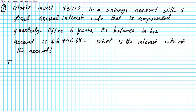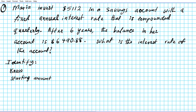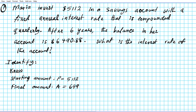So let's start by identifying what we know and want in this problem. The starting amount, also known as the principal P, is $5,112. The final amount or balance — we're going to call this A — is $6,490.88.